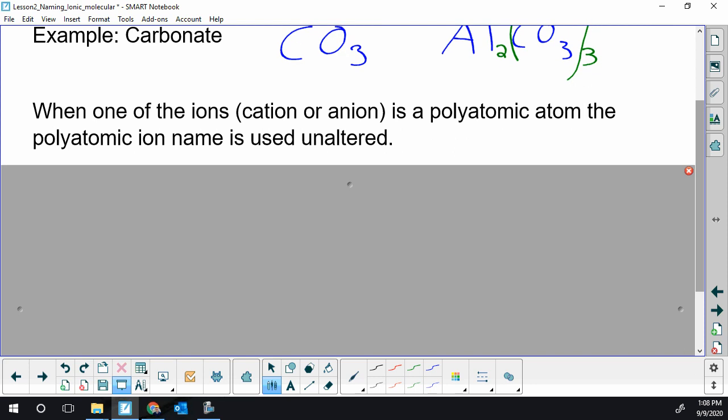Naming-wise, it's pretty straightforward. Balancing the charge is a bit more work. The naming, you really don't do anything different. When one of the ions, either the cation or the anion, but the cation is only going to be ammonium. That's the only possibility. Or the many anion options.